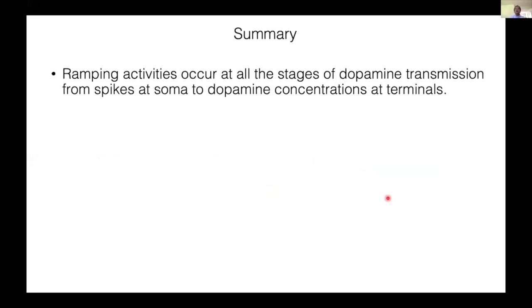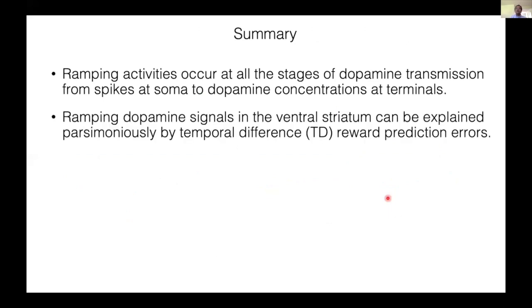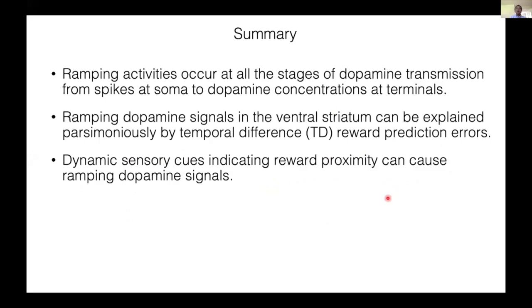So in summary, ramping activities occur at all the stages of dopamine transmission from spikes at soma to dopamine concentrations at terminals. Ramping dopamine signals in the ventral striatum can be explained parsimoniously by temporal difference prediction errors. We also showed that dynamic sensory cues indicating reward proximity, including navigational stimuli or simple moving bar, can cause ramping dopamine signals, highlighting the importance of sensory feedback that indicates transitions over states.